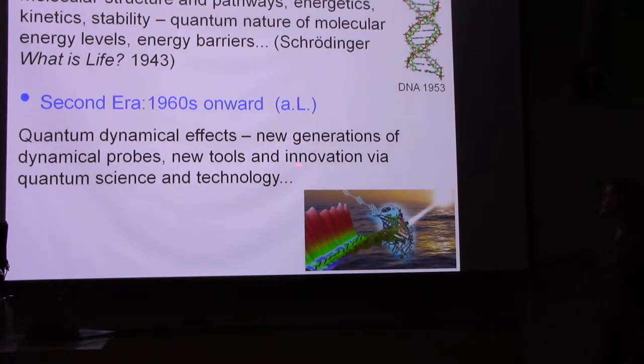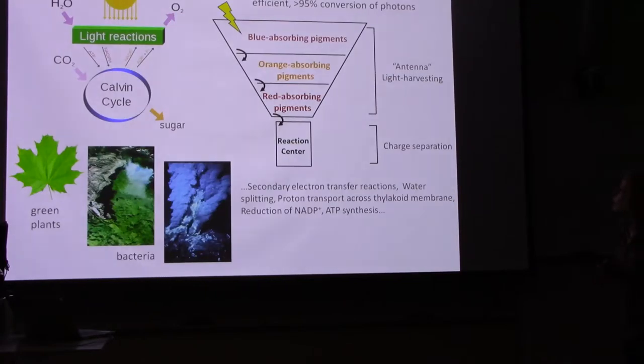largely in recent years from the quantum science and technology to generate new generations of dynamical probes. So in photosynthesis, what we're interested in here is actually just the very first part of photosynthesis. So here's a schematic of the process by which light is absorbed by green plants or bacteria. A number of reactions occur, and chemistry happens, and sugars, and energetic materials are made.